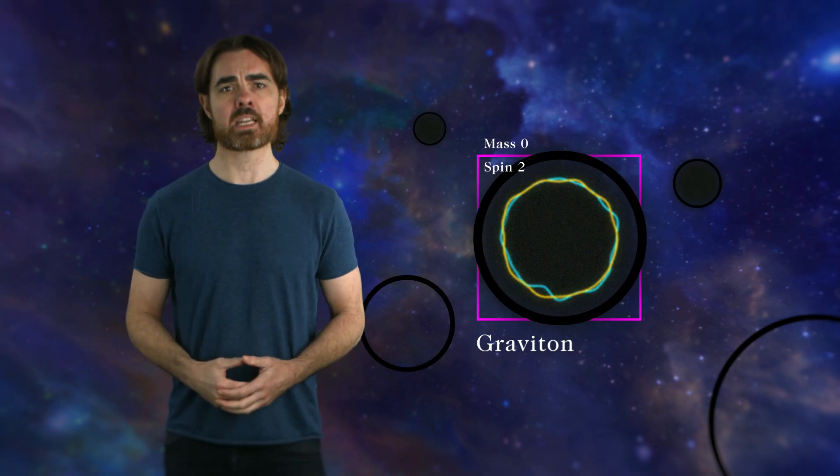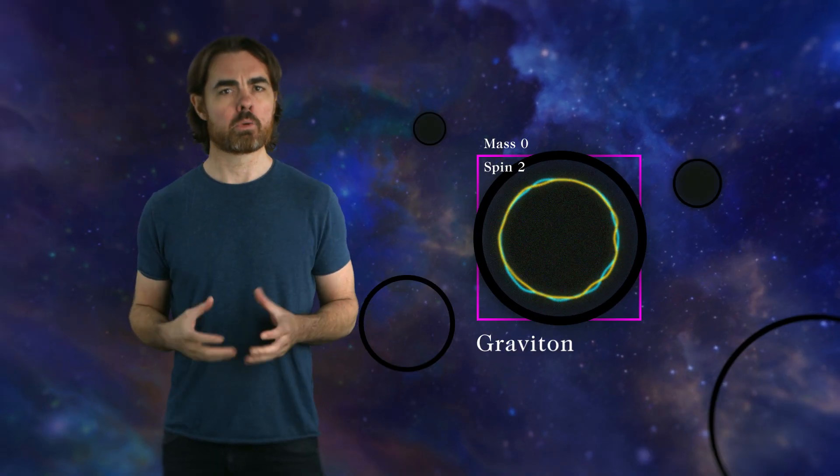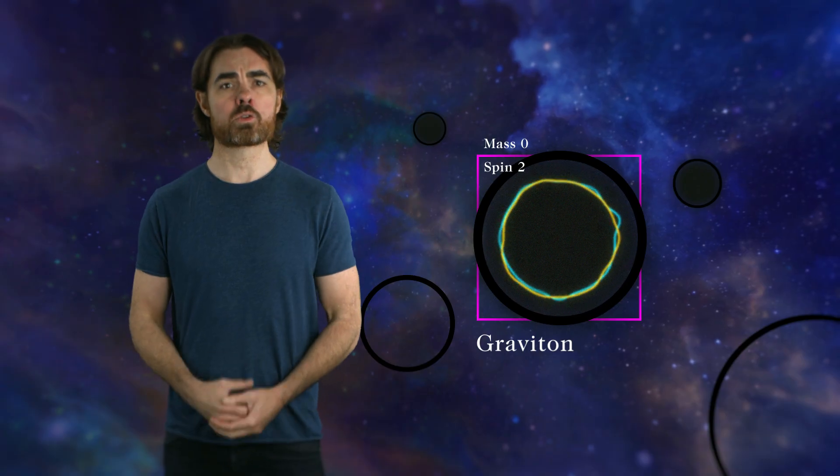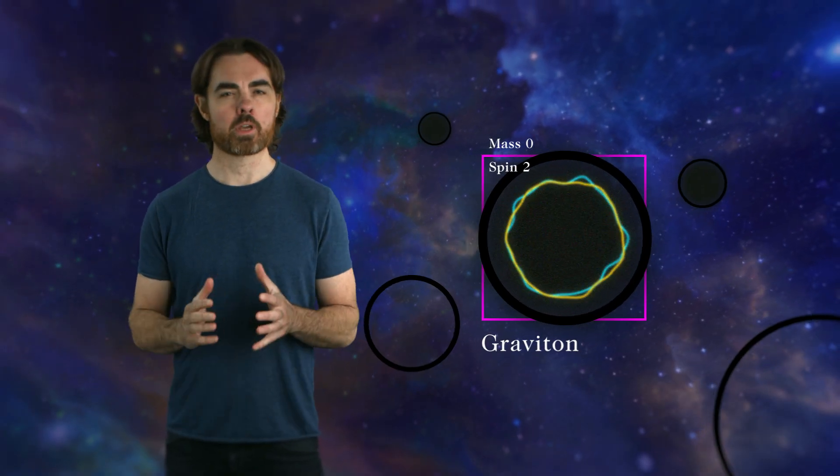If you use string theory to write down the gravitational field in what we call the low energy limit, which just means not in places like the center of a black hole, then it looks just like the gravitational field in Einstein's theory. A caveat: you can only get the right particles, including the graviton and the photon, out of string theory for a very specific number of spatial dimensions. Nine to be precise.